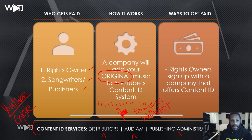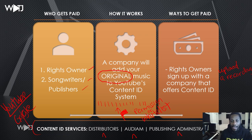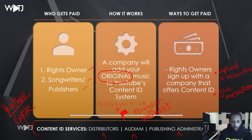Ways to get paid: rights owners will sign up with a company that offers content ID. You will upload a sound recording, and when you're with digital distribution, that's pretty much a part of it anyway. You upload a recording and you give metadata — you have to do both of those things in order to fully flag your music for royalties.